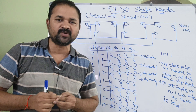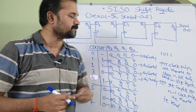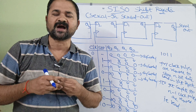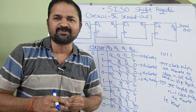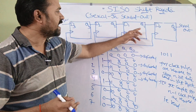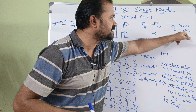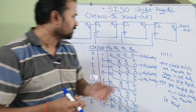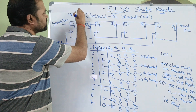Now let us discuss about SISO shift register. SISO stands for Serial In Serial Out — 'in' means input, 'out' means output. The name itself specifies the meaning. Here we have to provide the inputs in serial manner, that is one by one. Likewise, the shift register will produce the output in serial manner, that is one by one, bit by bit. This is the diagrammatic representation of a 4-bit SISO shift register.